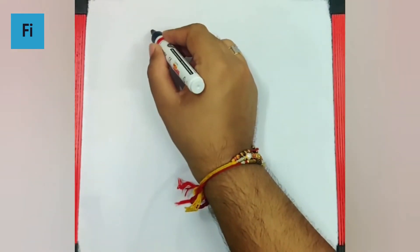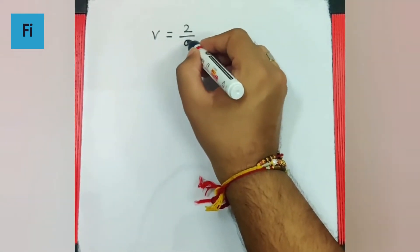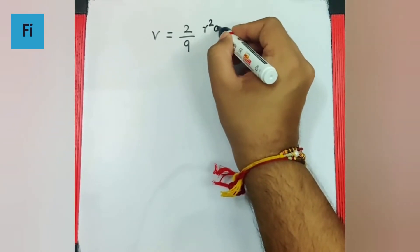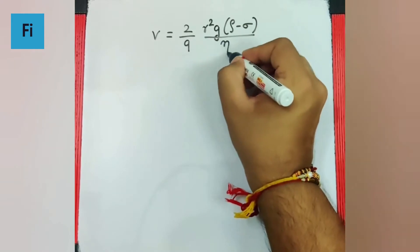Now definitely we can say the constant velocity is nothing but the terminal velocity. The formula is 2 by 9 R square G rho minus sigma upon eta.